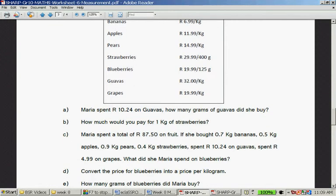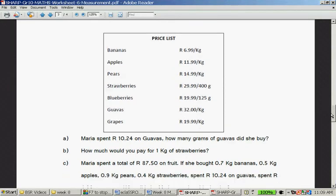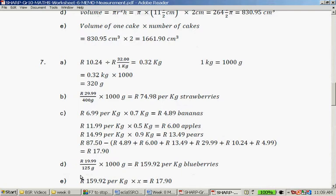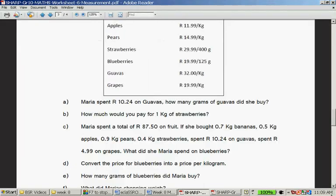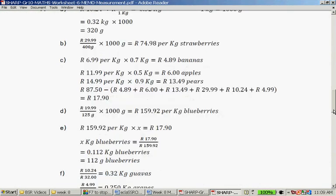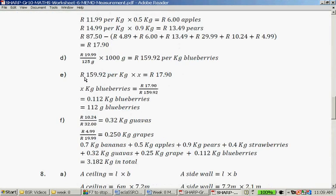And what's left over, 17.90, and that's for the blueberries. Convert the price for blueberries into price per kilogram. So you take the 199.99 divided by the grams, 125 times 1,000, and that gives you 159.92 per kilogram for the blueberries. How many grams of blueberries did Maria buy? She bought, this was amount per kilogram times something, gave her 17.90. So if you take the price and you divide by 159.92, you get 0.112 kilograms of blueberries, which is 102 grams times by 1,000.